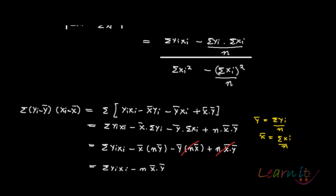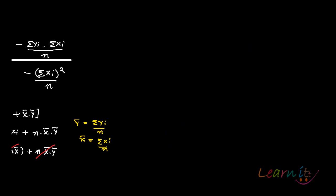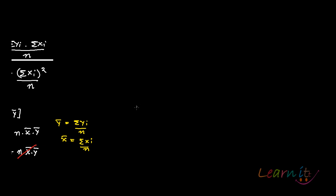Now if you look at the denominator, consider the expression summation of (xi minus x bar) squared. Just open this up and you will have xi squared plus x bar squared minus 2·xi·x bar.